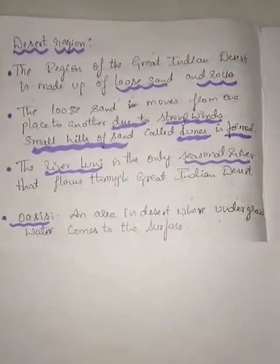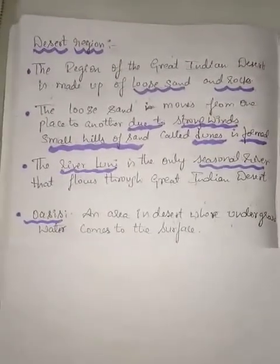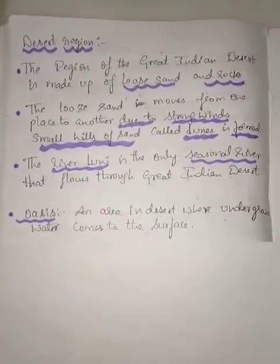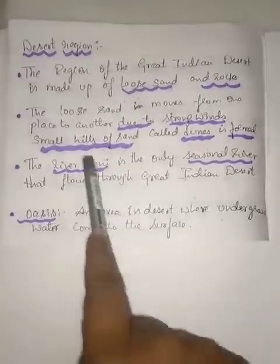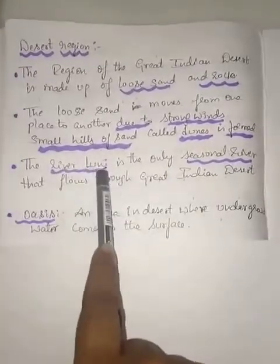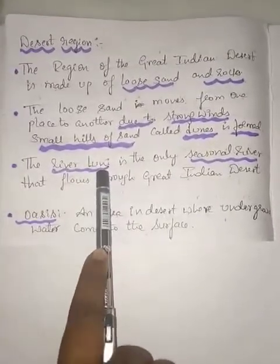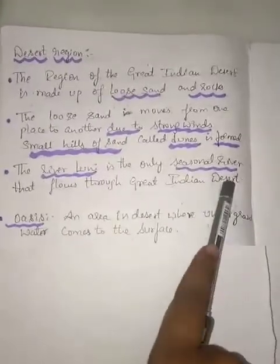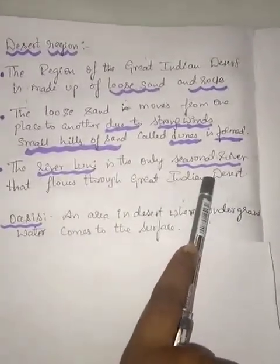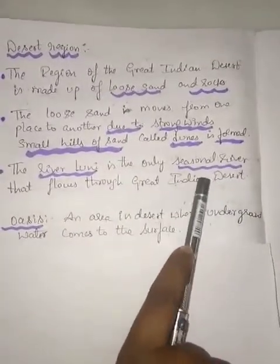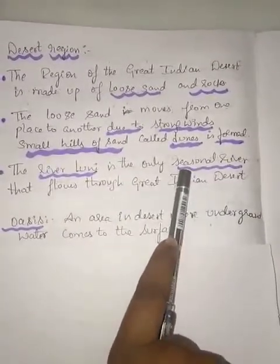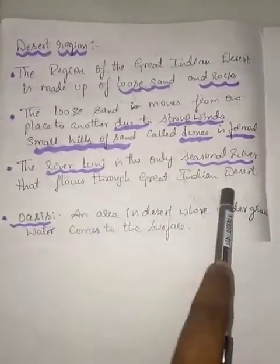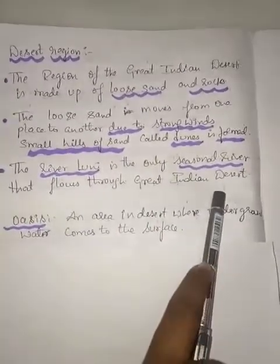The river that flows through the Great Indian Desert is the River Luni — L-U-N-I. The River Luni is the only seasonal river in this region; it does not flow throughout the year. It only flows seasonally through the Great Indian Desert.